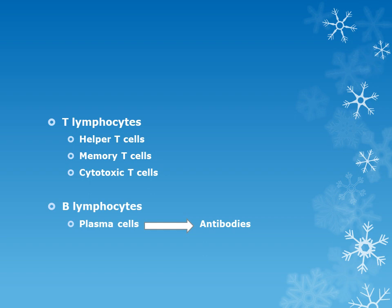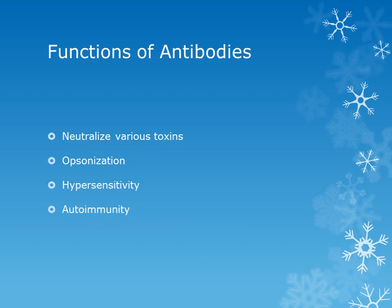These are the important types of immune cells that take part in immune reactions. The major types are T lymphocytes and B lymphocytes. T lymphocytes are further divided into helper T cells, memory T cells, and cytotoxic T cells. B lymphocytes comprise plasma cells, which ultimately give rise to antibodies. The four important functions of antibodies are: neutralization of various toxins, opsonization, participation in hypersensitivity reactions, and participation in autoimmune diseases.